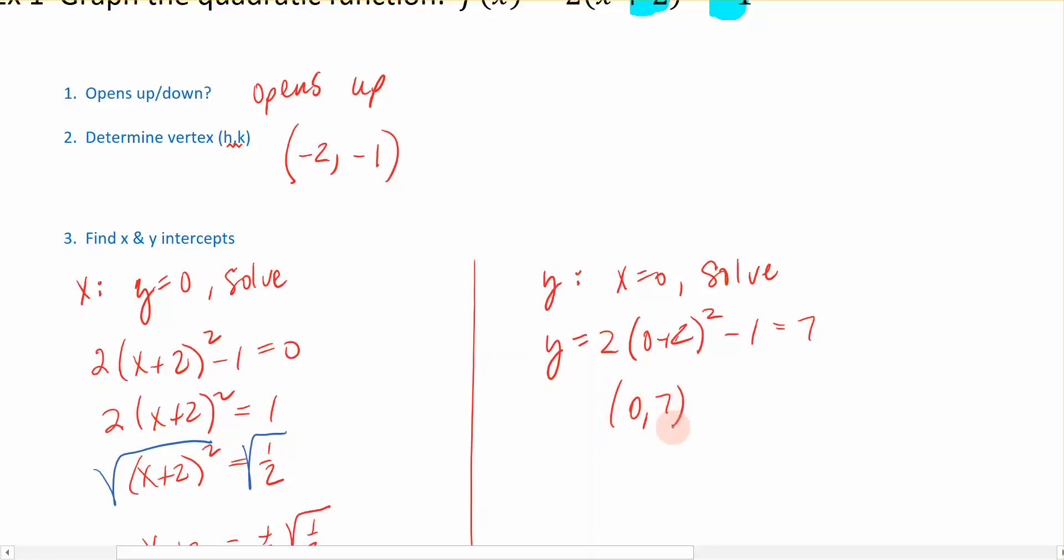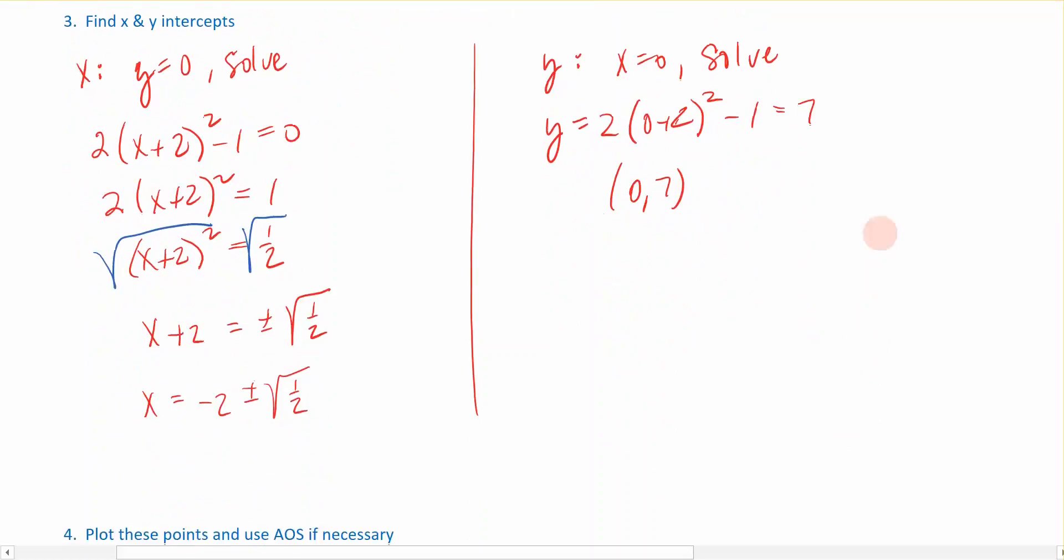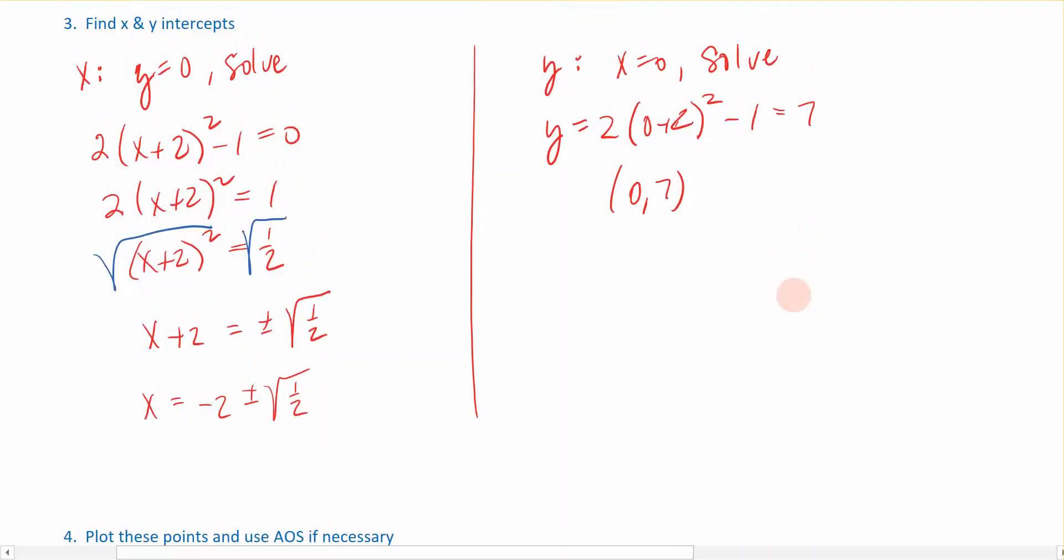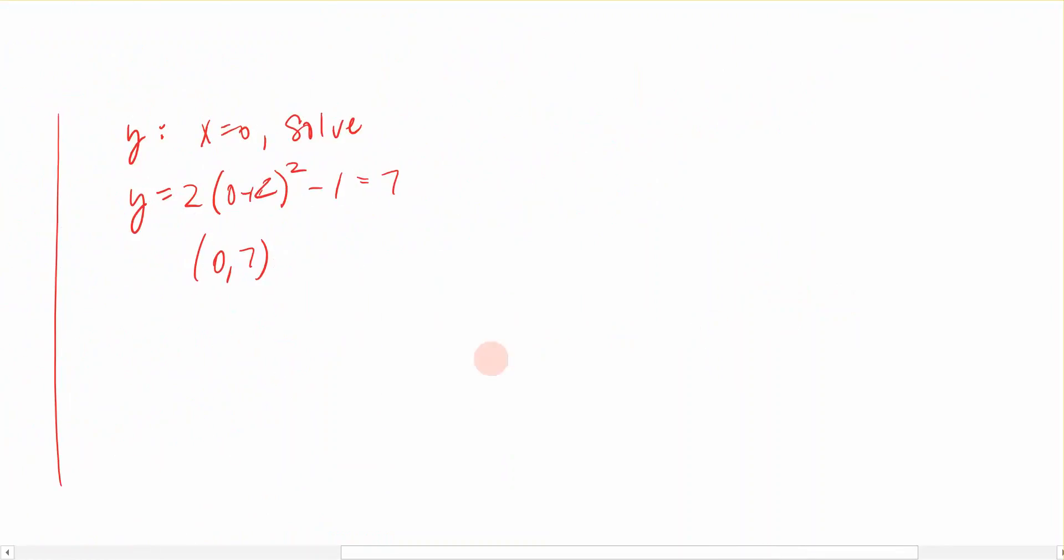Now the last thing we're going to do when we graph this is, if it's necessary, I will go ahead and use the axis of symmetry to be able to put points on both sides of my vertex. And we don't end up needing that in this example, but we might in a little while. So I have everything I need to be able to graph this, and let's go ahead and apply that.